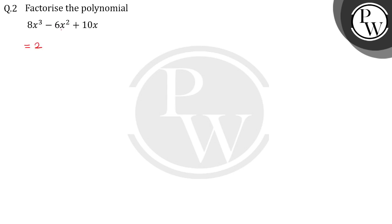For the variable part, we have x cubed, x squared, and x. The least power is 1, so we take x as common. This gives us 2x as the common factor, resulting in 2x(4x squared + 3x + 5). This is the factorization. I hope the question is clear to you. Thank you.